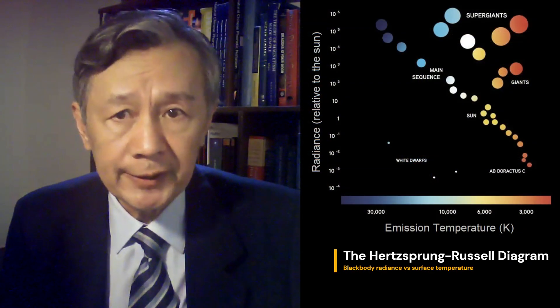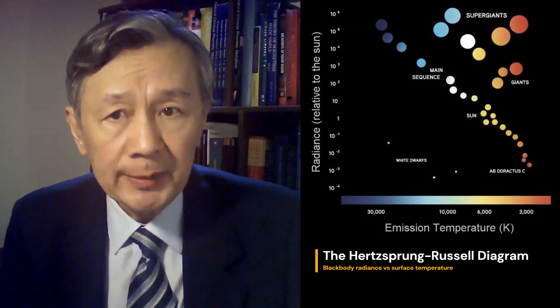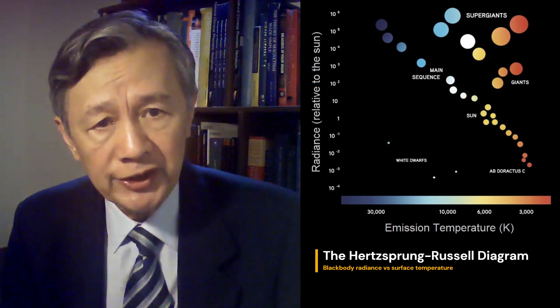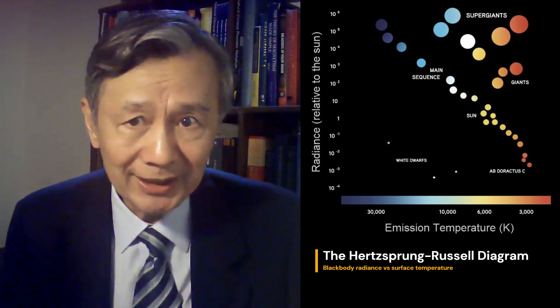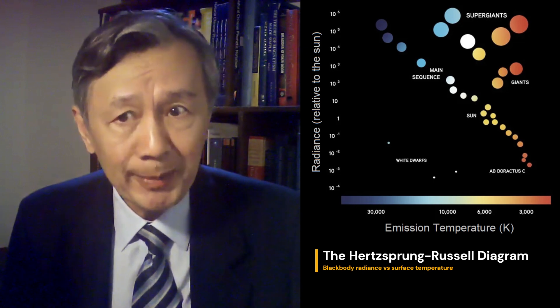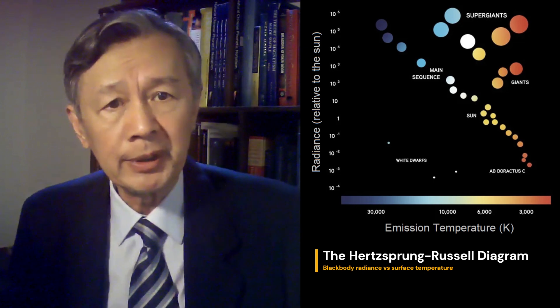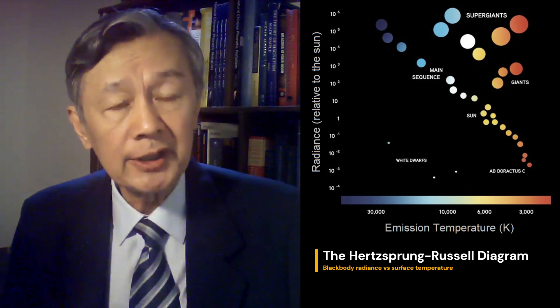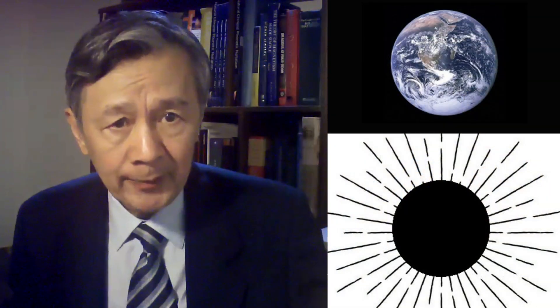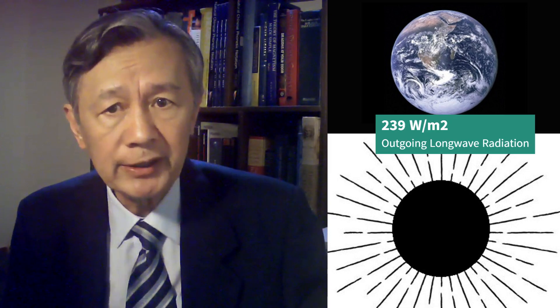In modern astrophysics, the simplest model for a remote star or planet is a black body, which allows the estimation of the surface temperature by using the Stefan-Boltzmann law. Seeing from remote space through an infrared telescope, Earth looks like a ball emitting rays in all directions,